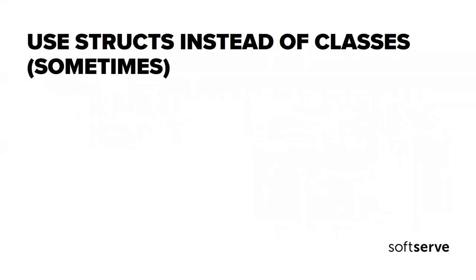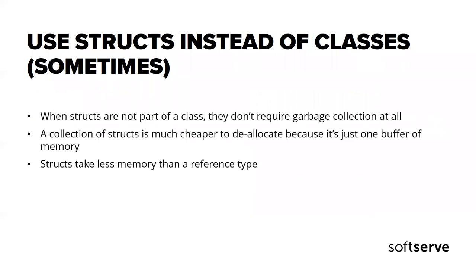The third technique relates to classes and structures. Structs have several benefits when it comes to deallocation. When structs are not part of a class, they are allocated on the stack and don't require garbage collection at all. Structs stored on the heap — when part of a class or reference type — are stored inline and deallocated when the containing type is deallocated. In collections, a collection of structs is much cheaper to deallocate because it's just one buffer of memory. Also, structs take less memory than reference types because they don't have an object header and method table.